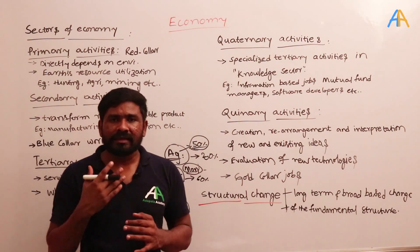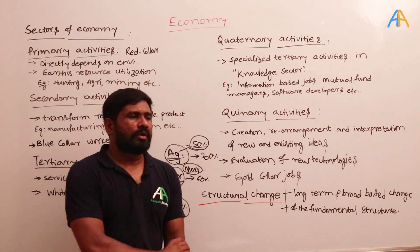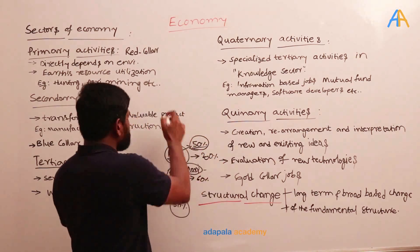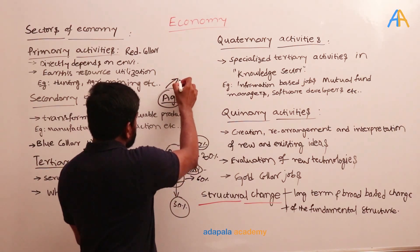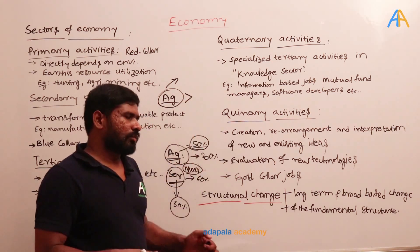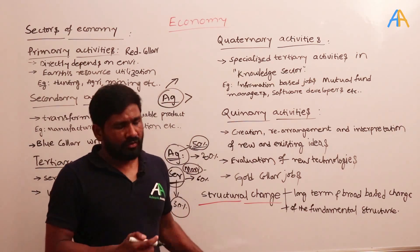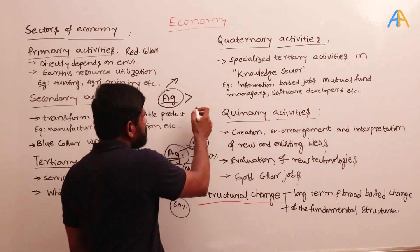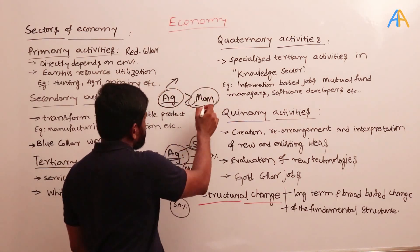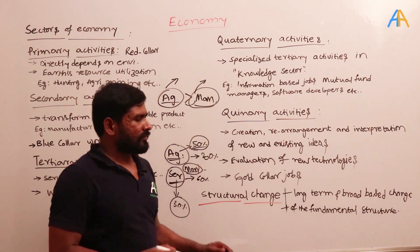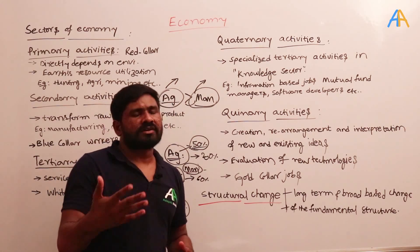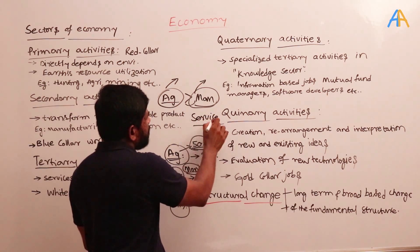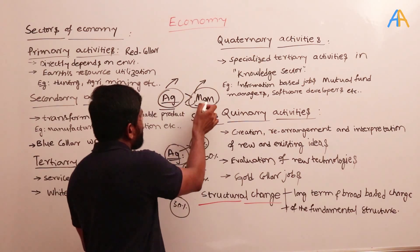The standard model of structural change in any economy works like this: when a country is underdeveloped, agriculture contributes more to the economy. As it progresses, industrialization happens — construction, manufacturing, factories come up — and people from agriculture move to manufacturing. As income increases, more people pursue higher education, go for better jobs, and the service sector and knowledge-based economy grow. So the sequence is: first agriculture, then manufacturing replaces agriculture, then service sector replaces manufacturing.